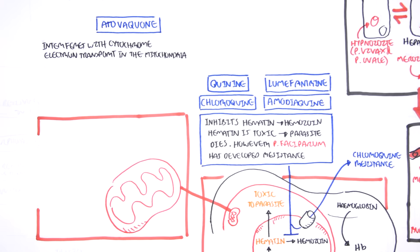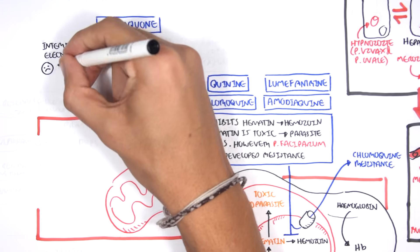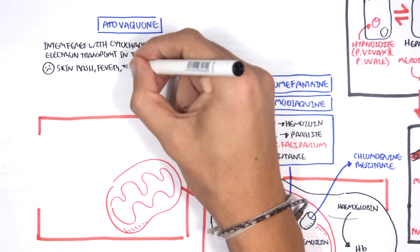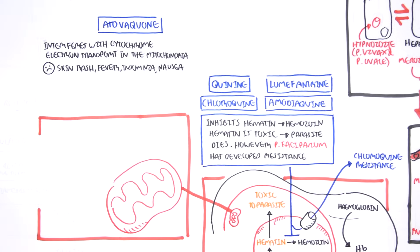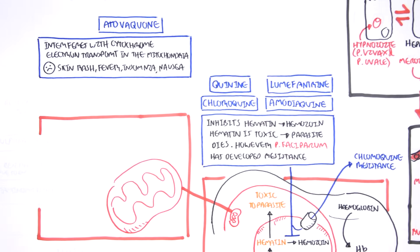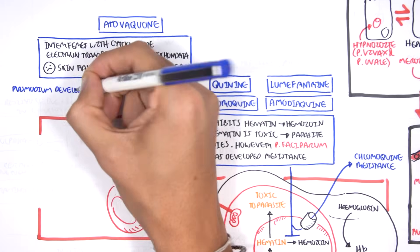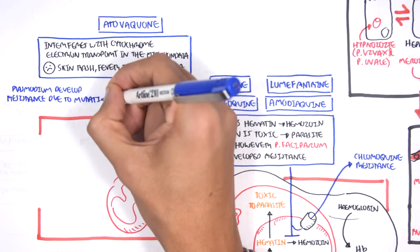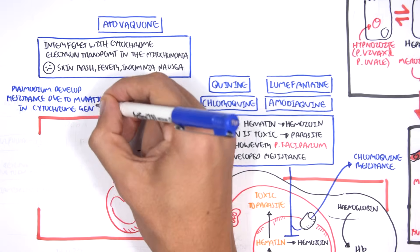Our own bodies also have cytochromes, but this is distinctively different from the parasitic cytochrome. Side effects of atovaquone include skin rash, fever, insomnia, and nausea. Some plasmodium parasites have actually been able to develop resistance to this drug due to mutations in their cytochrome gene.